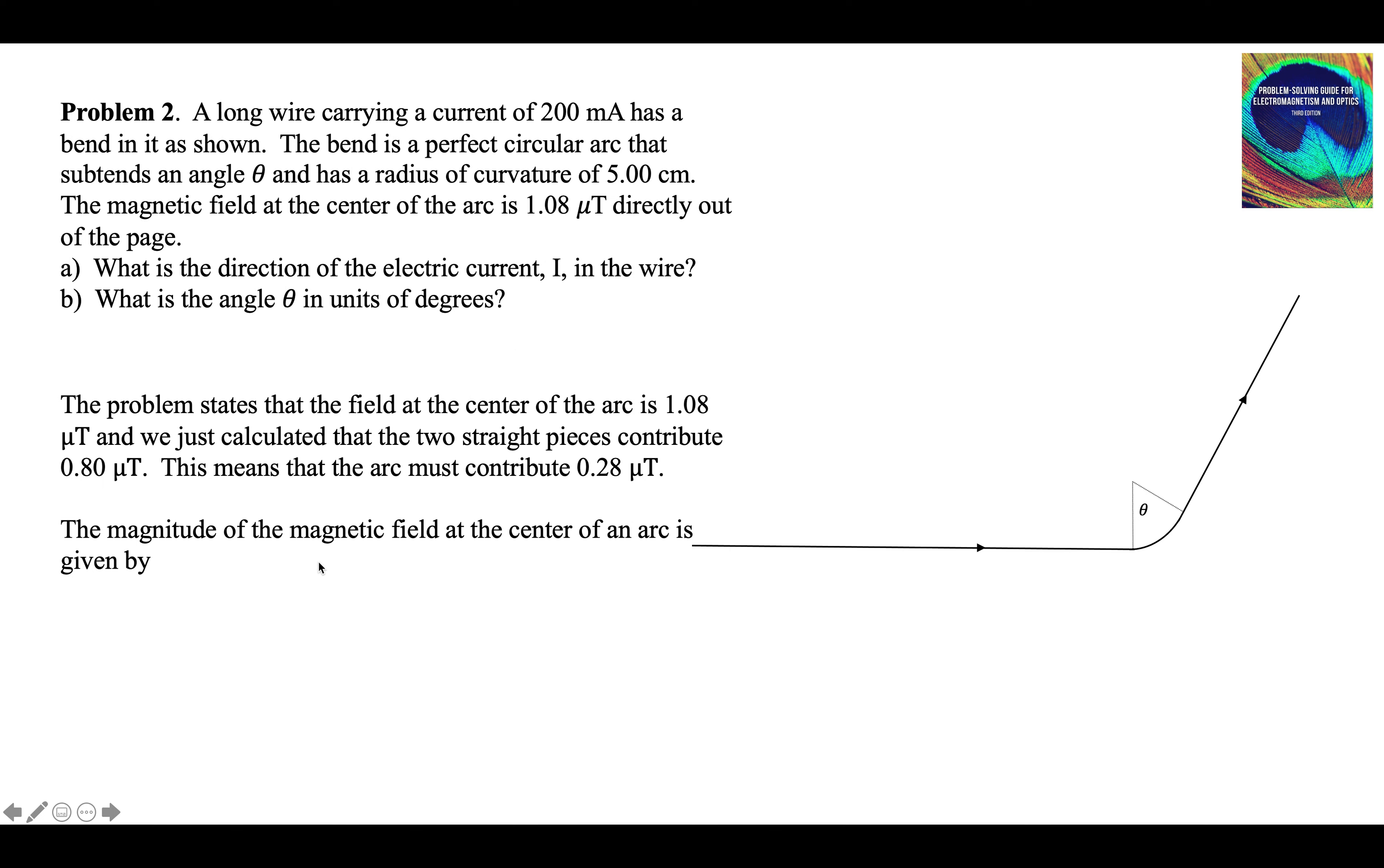The magnitude of the magnetic field at the center of an arc, mu-naught i over 4 pi r times the angle the arc subtends, and we know what the value is. It's 0.28 microtesla. So now we can calculate how big the angle has to be for an arc of five centimeters to produce a magnetic field of 0.28 microtesla at the center.